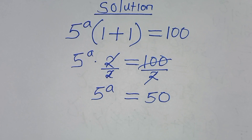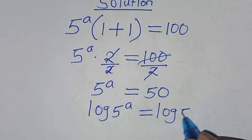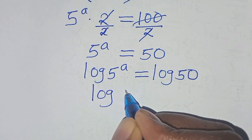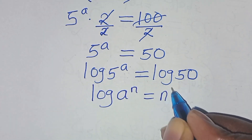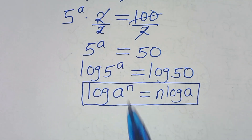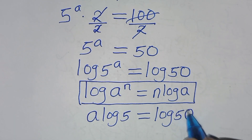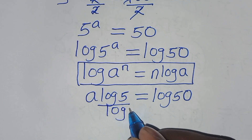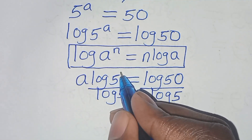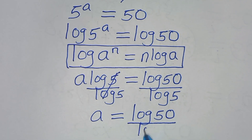To solve for a, we introduce logarithm on both sides, so we have log 5 to power a, this is equal to log 50. The next step is that log 5 to power a is in the form of log a to power n, which we can express as n log a. Applying this, log 5 to power a gives us a times log 5, this is equal to log 50. So let's divide both sides by log 5, so that a is equal to log 50 divided by log 5.